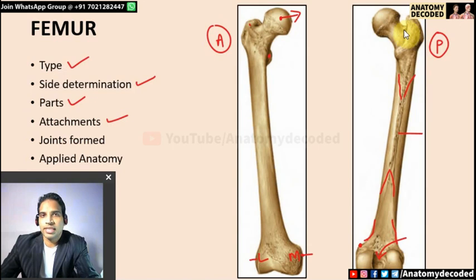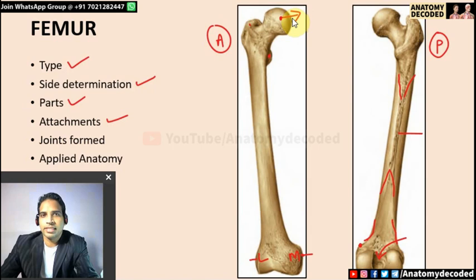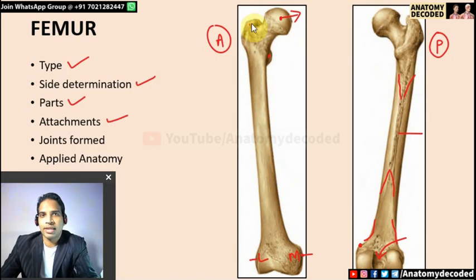The trochanteric fossa gives attachment to the tendon of obturator externus. Just in front of the trochanteric fossa is the attachment of obturator internus with two gemelli. All obturator externus, internus, and two gemelli attach onto the inner aspect of the greater trochanter. In the head of the femur is the attachment of ligamentum teres femoris. The intertrochanteric line gives attachment to the capsular ligament of the hip joint, with vastus lateralis above and vastus medialis below.